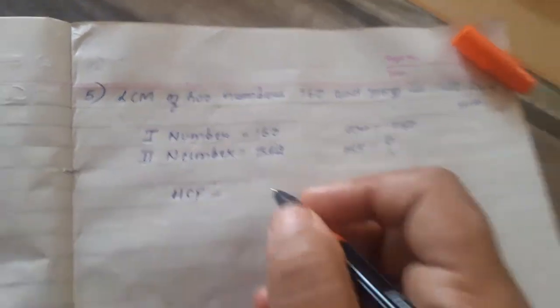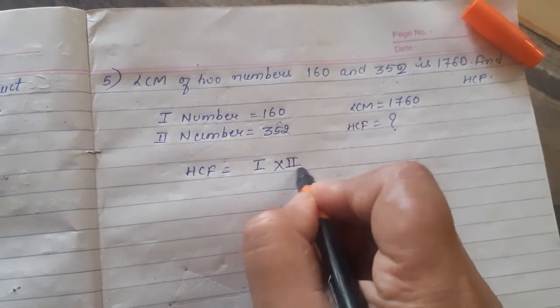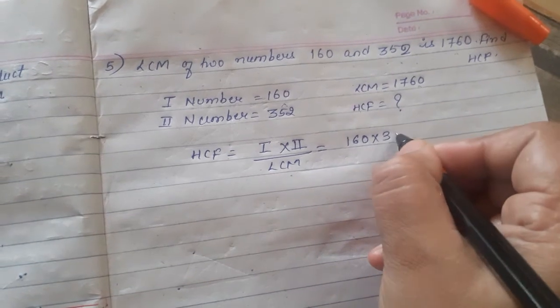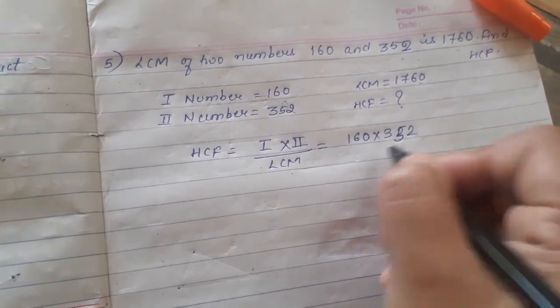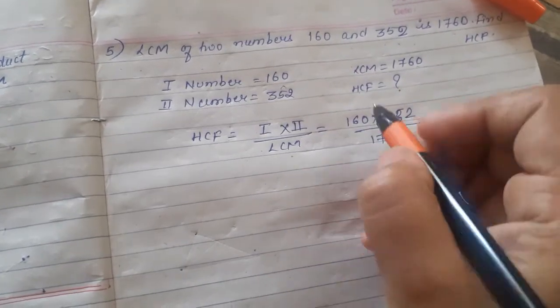HCF will be equal to first number multiplied by second number divided by LCM. So first number is 160, second number is 352, and the LCM is 1760.